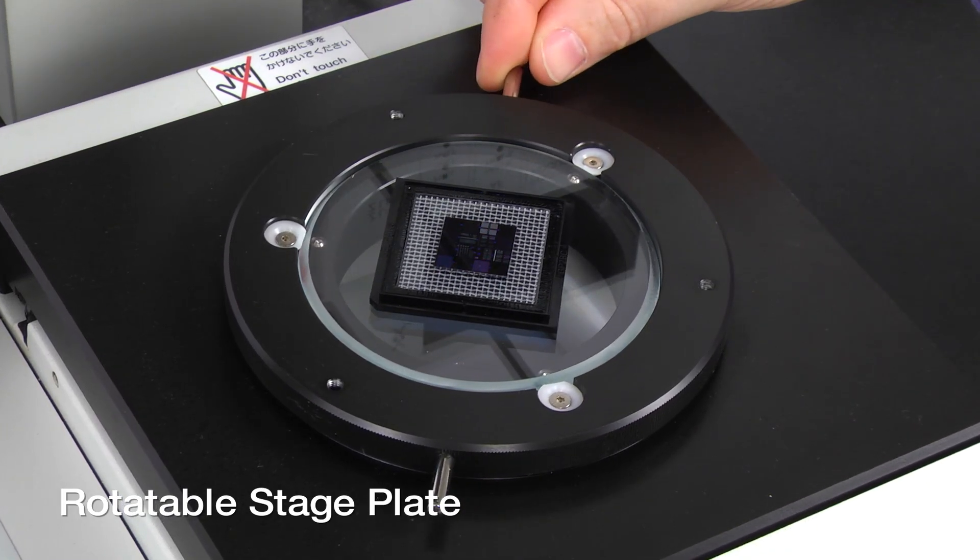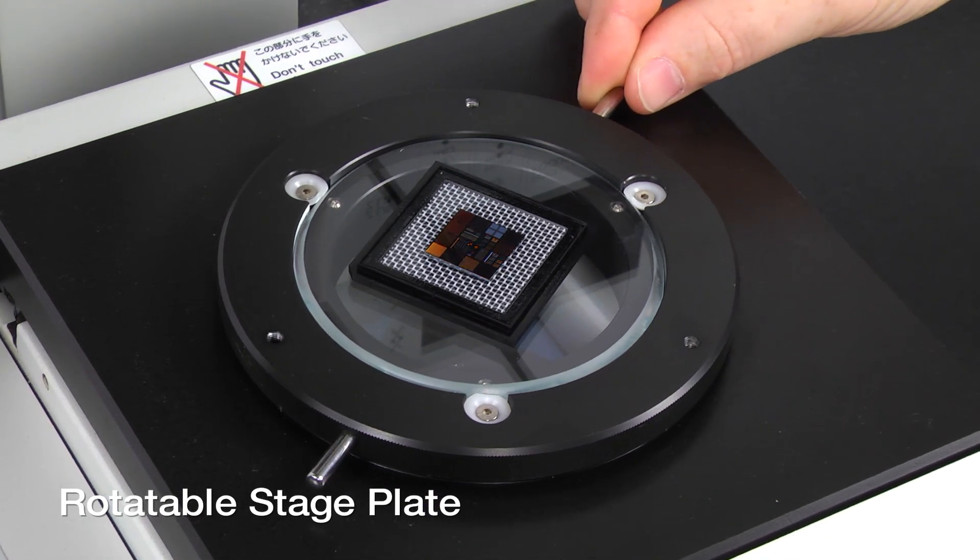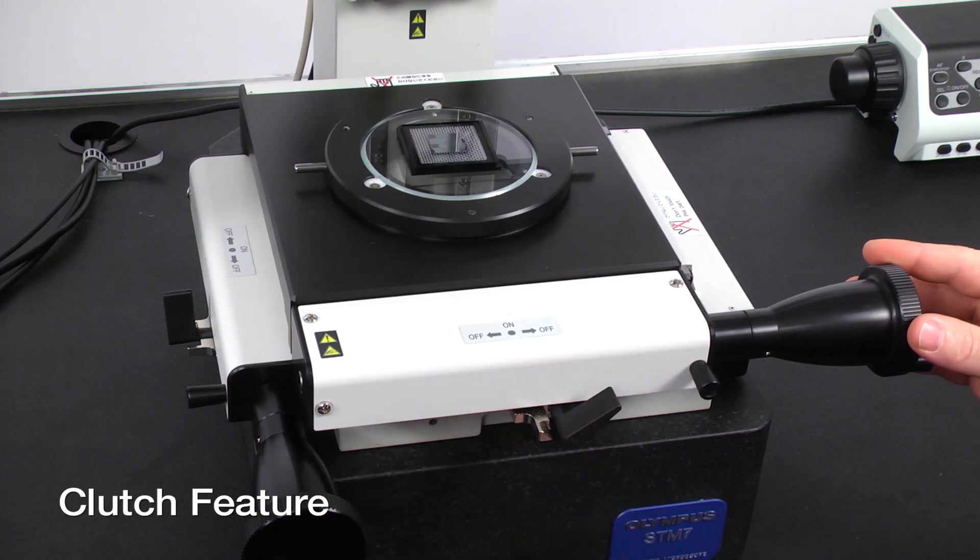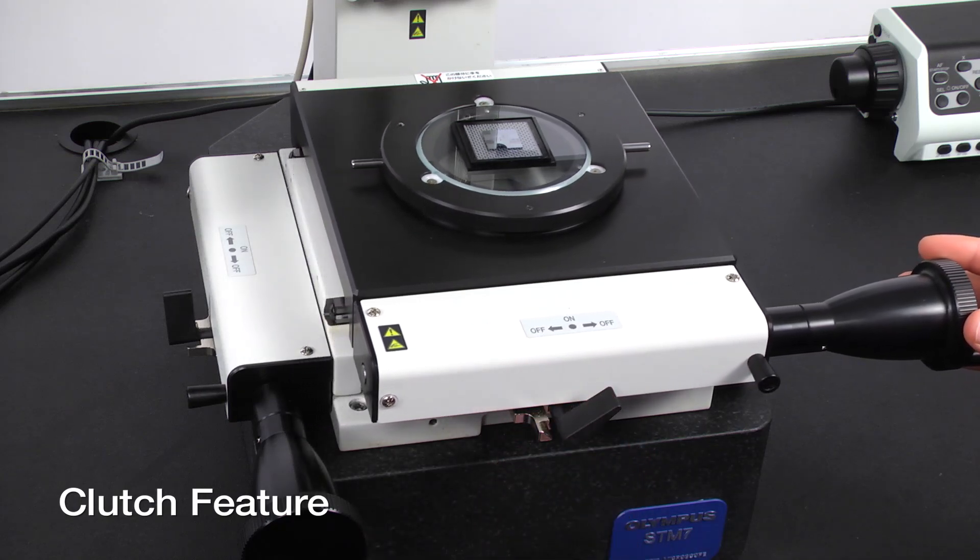Stages can be equipped with a rotatable stage plate to simplify measuring in a single axis. By utilizing the clutch feature, the stage can be moved quickly for greater distance measurements.